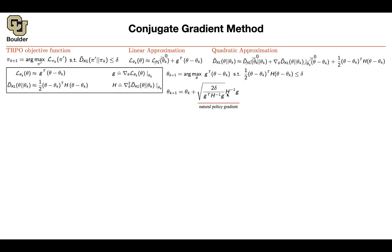So the trick is: call H-inverse g some vector x, and instead of inverting H, just solve the linear system Hx = g to find x. You can evaluate the action Hx efficiently — first compute your gradients (which is efficient via backpropagation), giving you a vector. Then take that vector, transpose it, and multiply by x to get a scalar. Taking the derivative of a scalar-valued function is again easy. So you can compute Hx efficiently without ever constructing H explicitly.